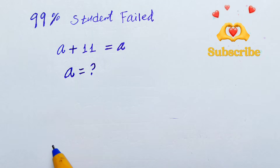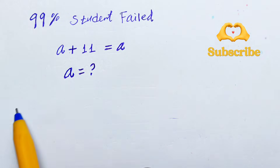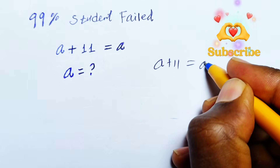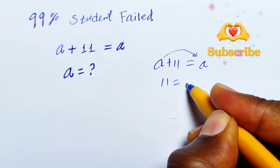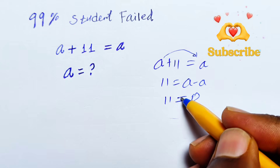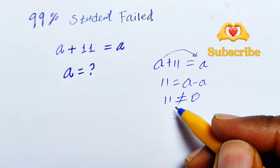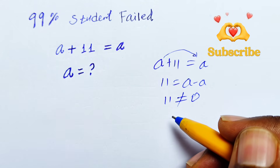Hello everyone, welcome back to my channel. Here we have a question that most students fail to get: the value of a, where √(a + 11) = √a. You may try to calculate this algebraically — a + 11 = a, so moving a to the other side gives 11 = a − a, which means 11 = 0. This is not equal, but the conclusion that there is no value of a is wrong. Let's find the value of a in another way.